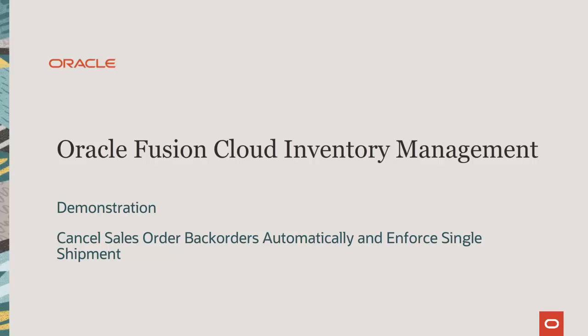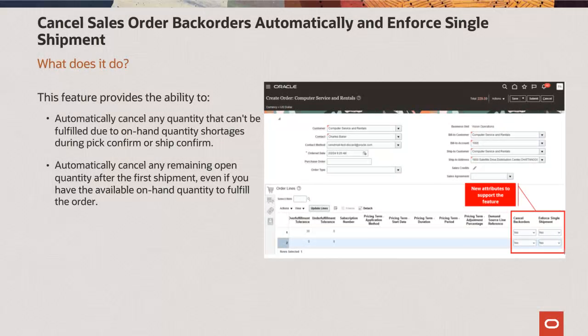This demonstration shows how you can use cancel sales order back orders automatically and enforce single shipment to enhance your business. This feature allows you to automatically cancel any quantity that can't be fulfilled due to on-hand quantity shortages during pick confirm or ship confirm.